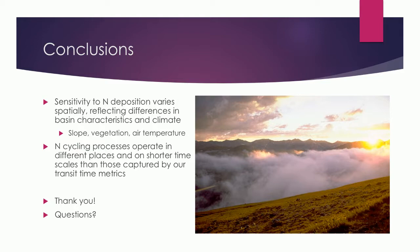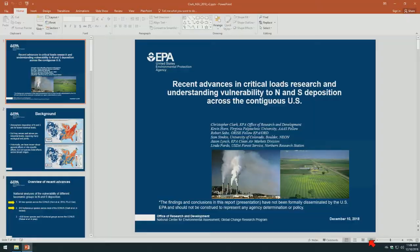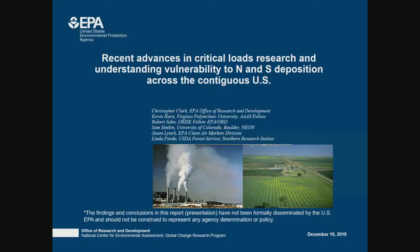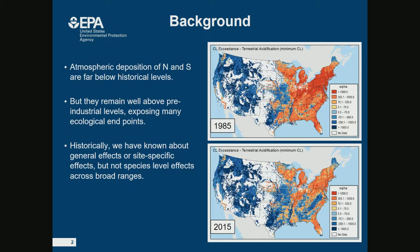Our next speaker is Chris Clark from the EPA — and I really want to thank our federal scientists who are here because they need our support these days. A little bit of background: atmospheric deposition of nitrogen and sulfur are far below historic levels from the 1980s, when they peaked, and we've come a long way. That's a really positive story for public policy. But they still remain well above pre-industrial levels, exposing many ecological endpoints to potential risks.